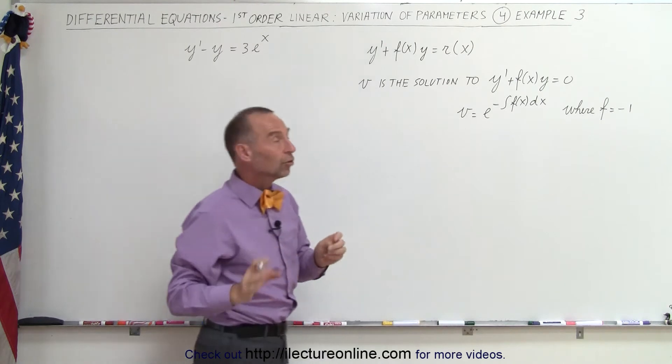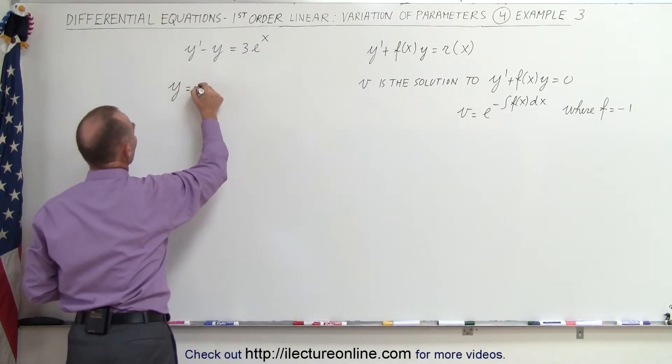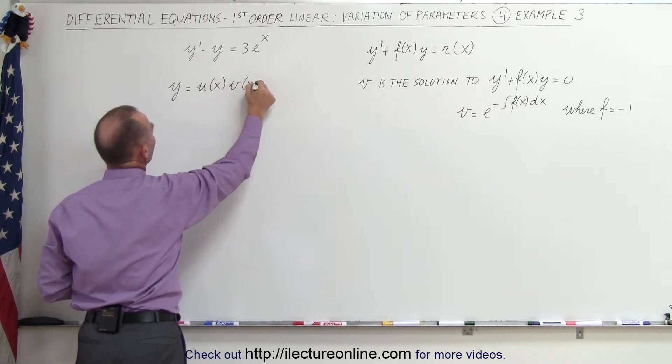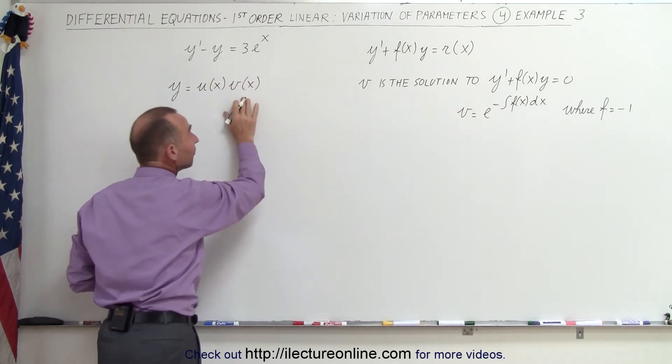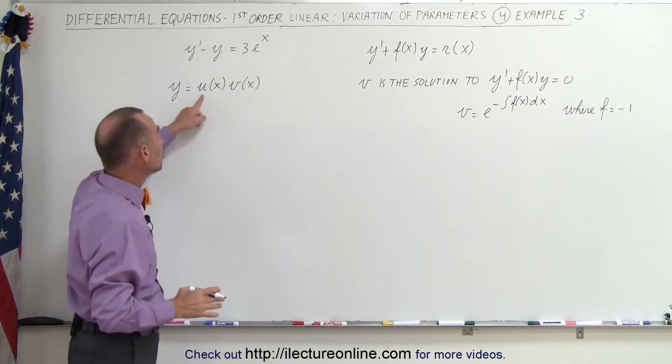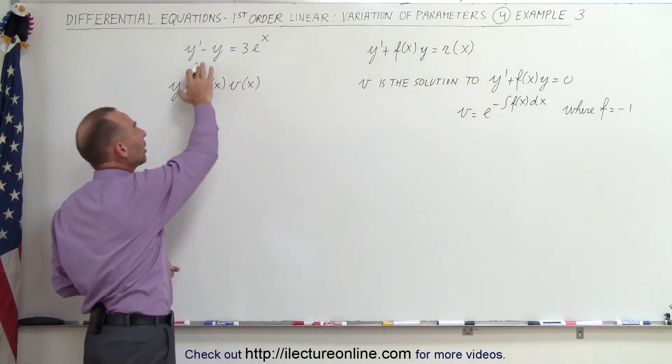So we're going to assume that we can find the solution y is simply equal to the product of some function of x, let's call it u, times another function of x, v of x, where v is the solution to the homogeneous part, and all we have to do is find u so that this product will then be the solution to the differential equation.